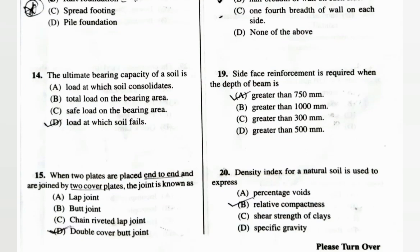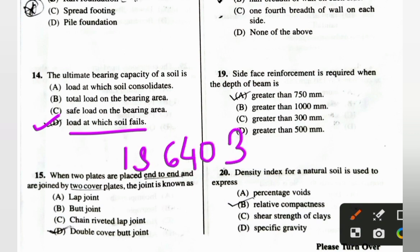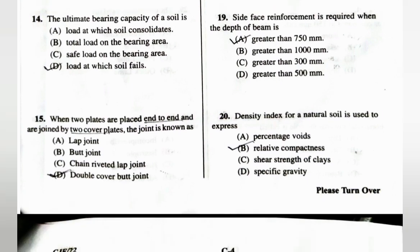The ultimate bearing capacity of a soil is the load at which the soil fails. This definition is as per IS code 6403.